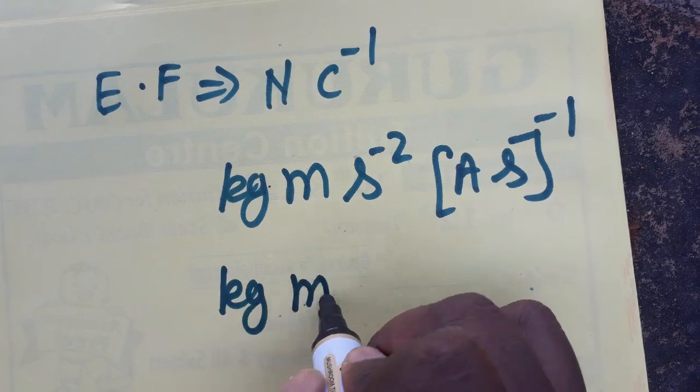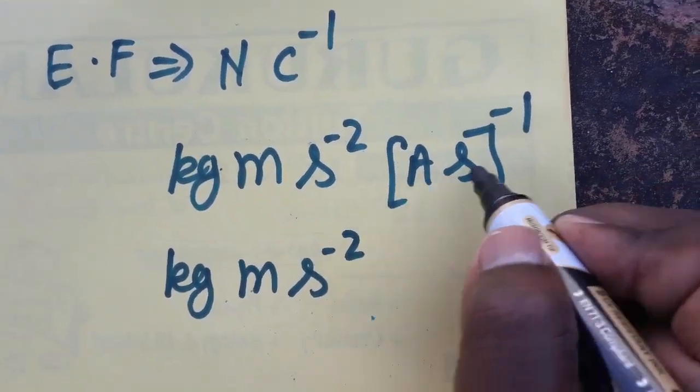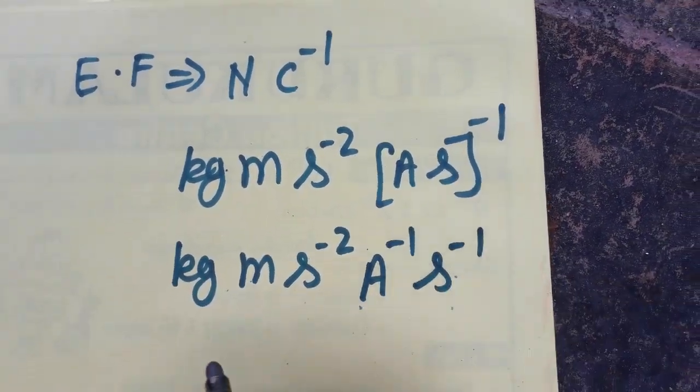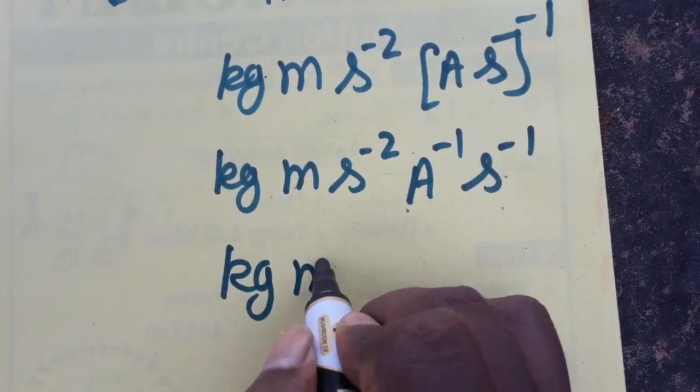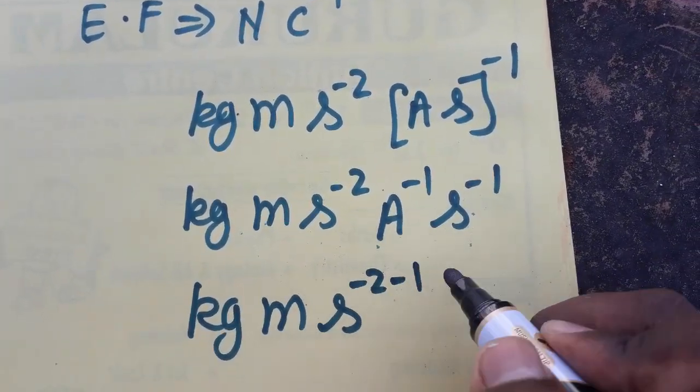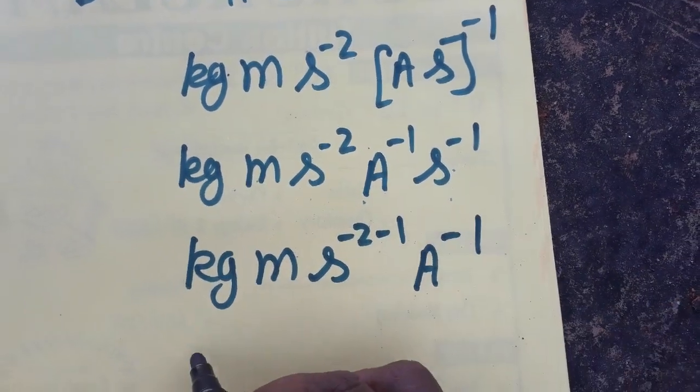So kg meter second minus 2, and this inverse I am bringing inside, A inverse, S inverse. So kg meter second minus 2 minus 1, the power I am making simplification, so ampere minus 1.